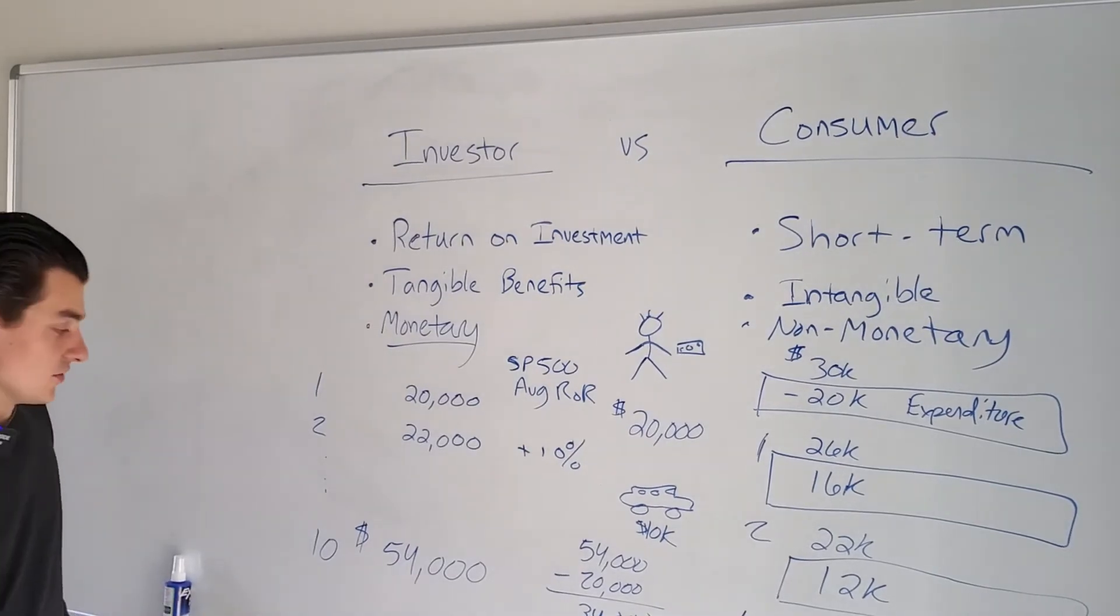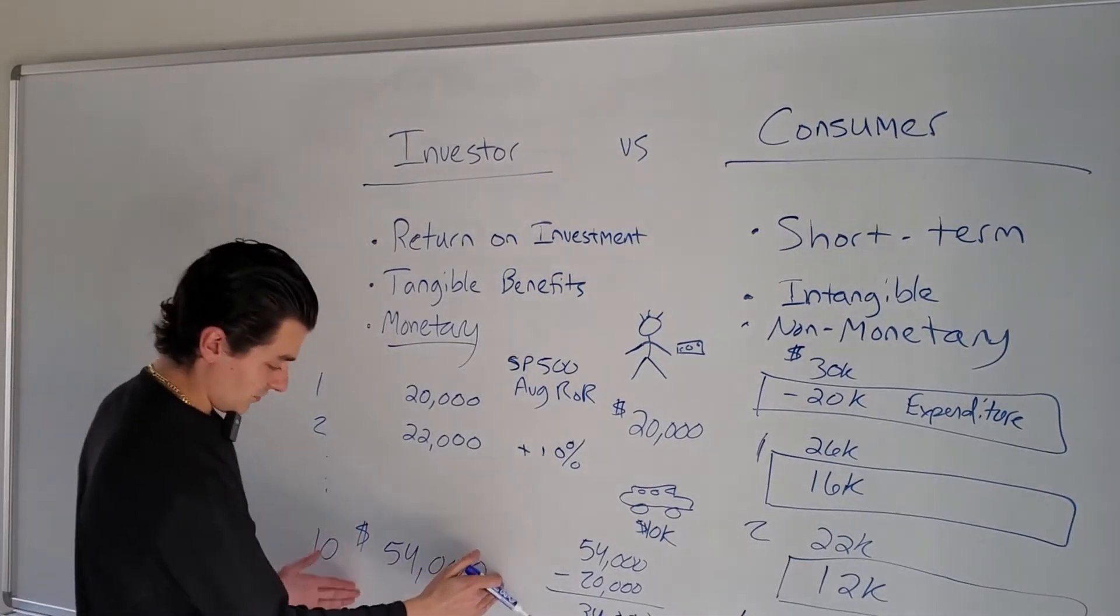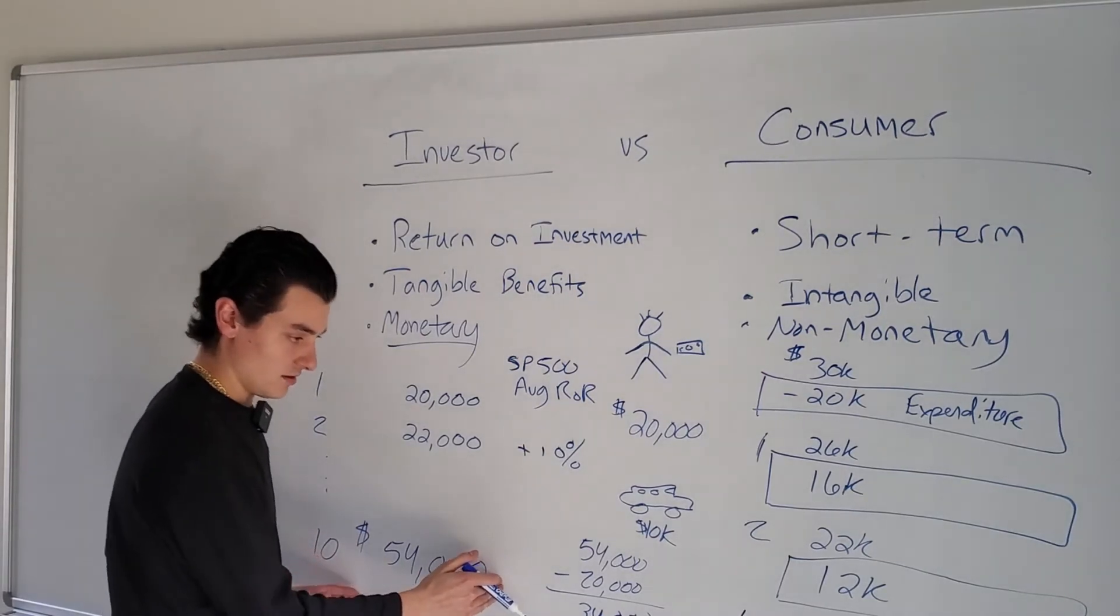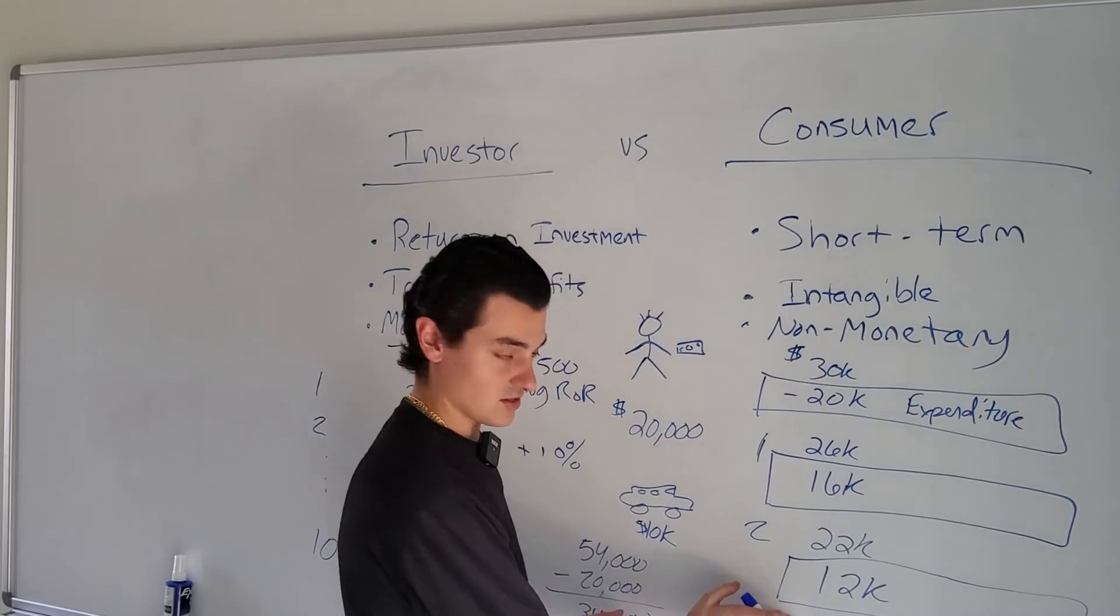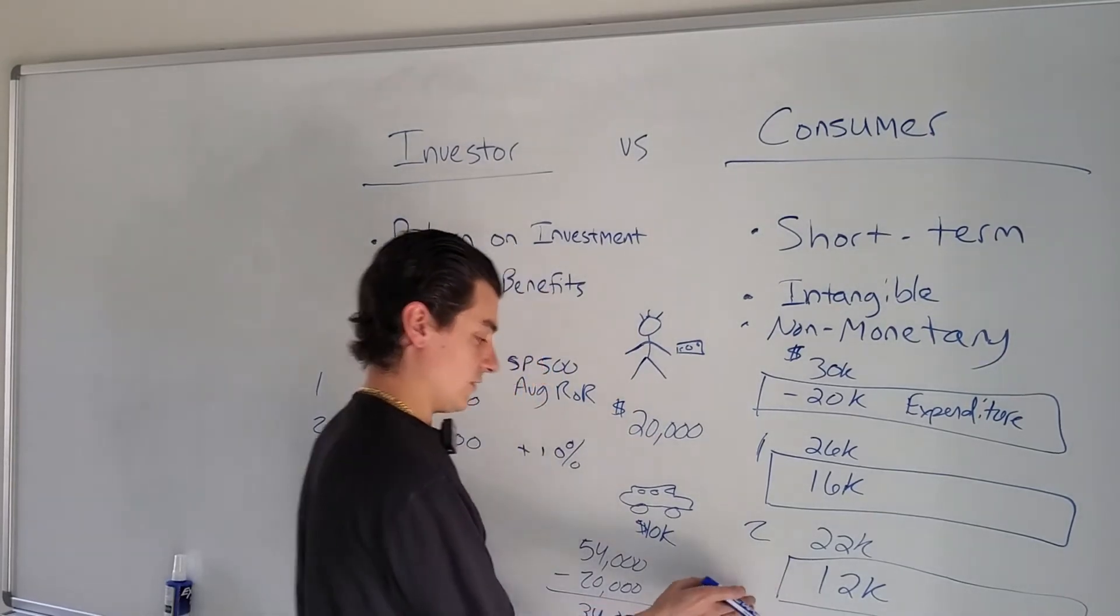This is a difference of $34,000 just off of the increase in the value of the investment over time. But really, he ends off with more than that. He's ending off with $54,000.